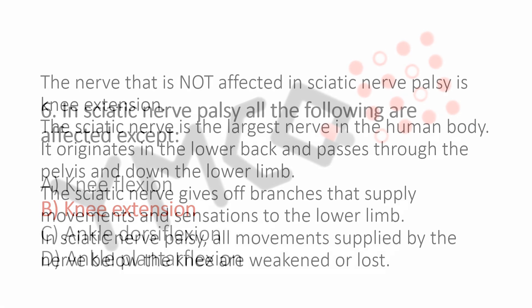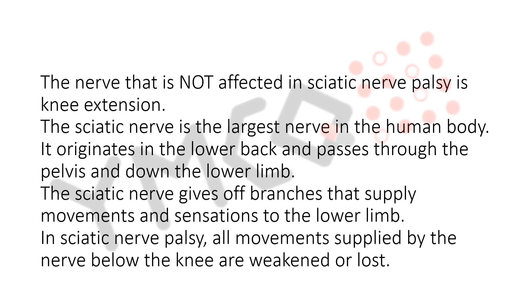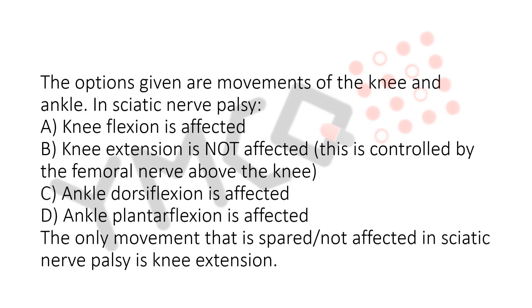Explanation for this question: the nerve that is not affected in sciatic nerve palsy is knee extension. The sciatic nerve is the largest nerve in the human body. It originates in the lower back and passes through the pelvis and down the lower limb, giving off branches that supply movements and sensations to the lower limb. In sciatic nerve palsy, all movements supplied by the nerve below the knee are weakened or lost. The options given are movements of the knee and ankle.